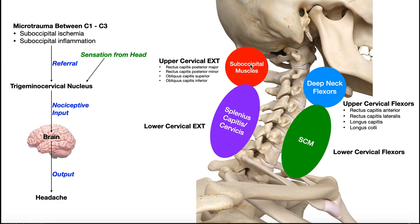There are two very specific and extremely important groups of muscles up here. On the anterior side of the neck, we have the upper cervical flexors — generally termed the deep neck flexors, and there are four of them: rectus capitis anterior, rectus capitis lateralis, longus capitis, and longus colli. These four deep neck flexors are mainly responsible for flexion of the upper cervical spine.